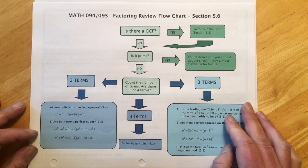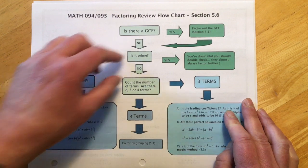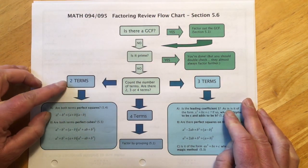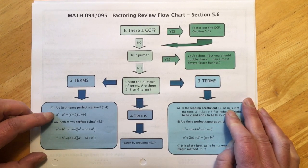And then for two terms, it's going to be one of two things. It could just be a GCF with a little two term factor left over. So occasionally we do run into that.